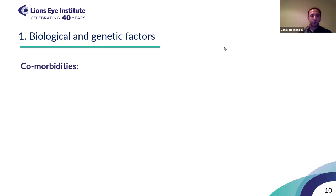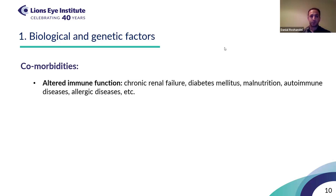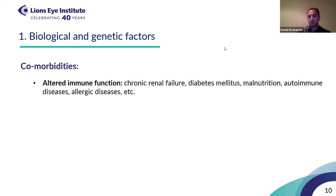There is a long list of comorbidities associated with dry eye disease and ocular surface diseases. These can be categorized by type, with probably the most important being diseases associated with altered immune function. Examples include chronic renal failure, diabetes mellitus, malnutrition, autoimmune diseases, and allergic diseases, though the list is very long.